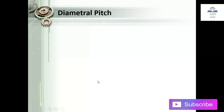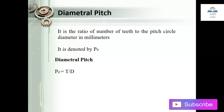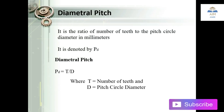The next one is the diametral pitch. Diametral pitch is the ratio of the number of teeth to the pitch circle diameter in millimeters. It is denoted by PD. So PD equals T divided by D, where T is the total number of teeth on a gear and D is the pitch circle diameter.